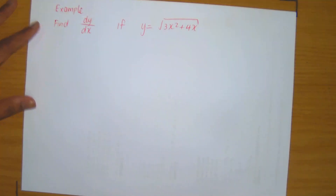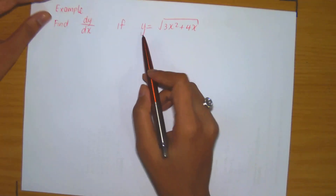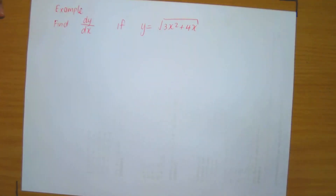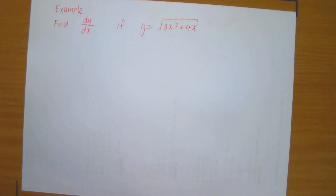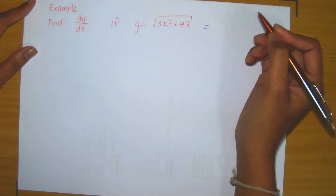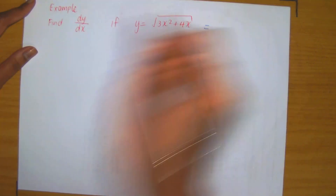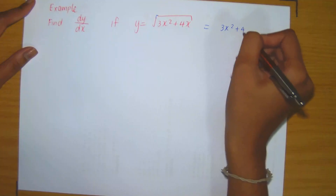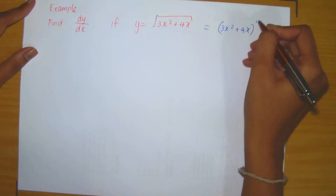Now let's look at examples. Compute the derivative of y equals the square root of 3x squared plus 4x. Before considering the chain rule, quickly recall all previous basic rules of differentiation you have learned. Will any of those rules be useful right now? It's clear that we can't apply them directly — we need some other intervention, which is going to come from the chain rule.